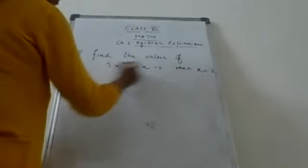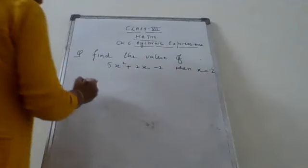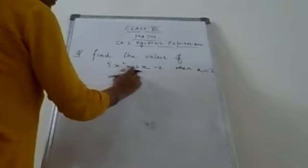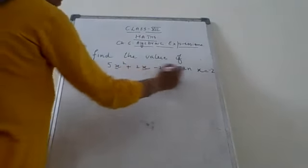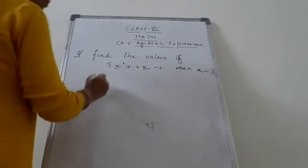Find the value of 5x squared plus 2x minus 2 when x is equal to minus 2. What we will do here, wherever you have variable x, you will substitute the value minus 2.